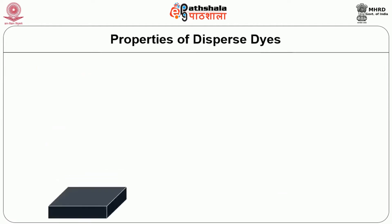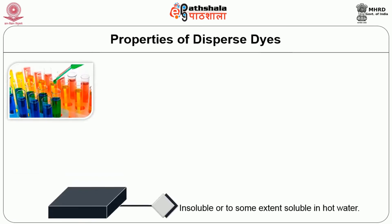The disperse dyes are insoluble or to some extent soluble in hot water. When you immerse disperse dye in water, it gets dispersed and there is no solubility. When we apply higher temperatures, the solubility of the disperse dyes gets improved.